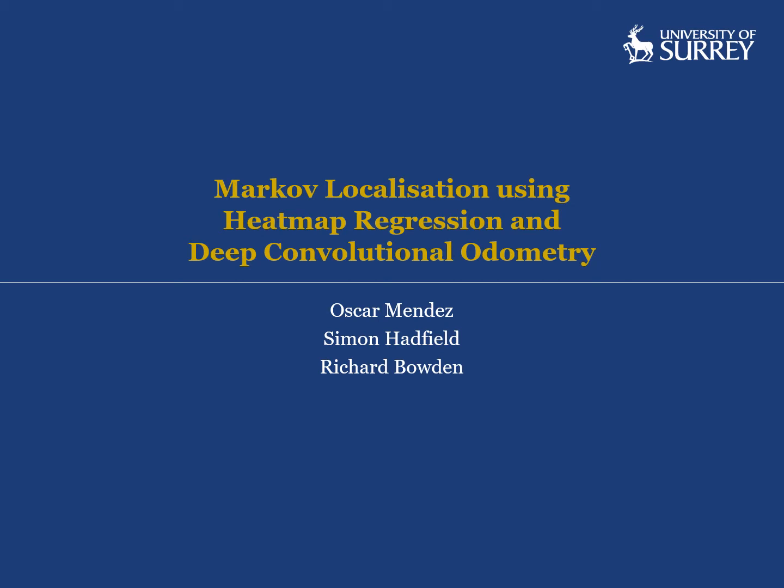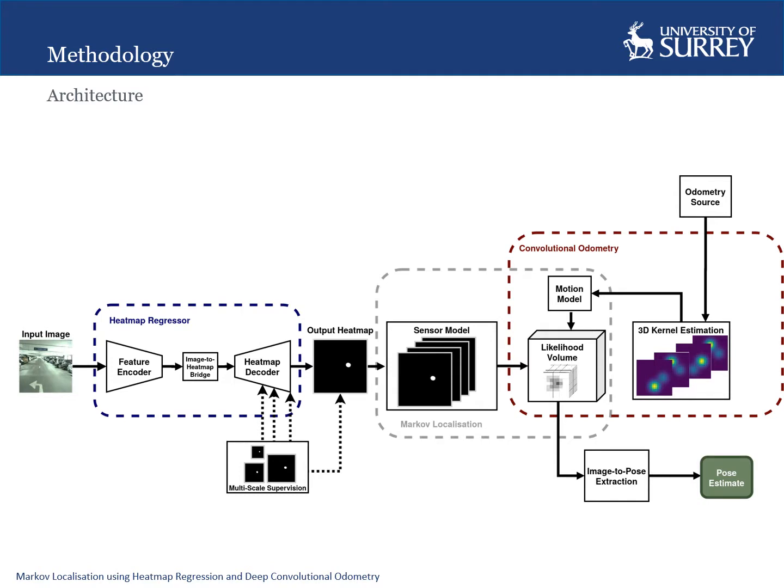Markov localization using heatmap regression and deep convolutional odometry. In this work, we present a localization method that combines the efficiency of deep learning models with the statistical representation of Markov localization.